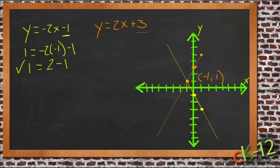And if we try the same thing with the other one, we get 1 for y equals 2 times -1 plus 3. So -1 in for x, 2 times -1 is -2, and -2 plus 3 equals positive 1. So it works for that equation too.